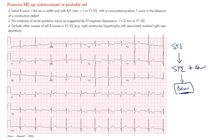Because there's a posterior MI, remember there are no posterior leads in the standard 12-lead EKG. Because of that, we have to infer what's going on posteriorly from other leads. The leads we tend to use are the right precordial leads — V1, V2, and sometimes V3 — which can give us a good idea.